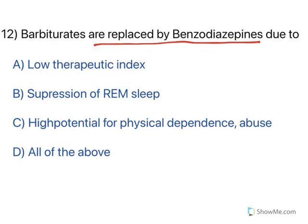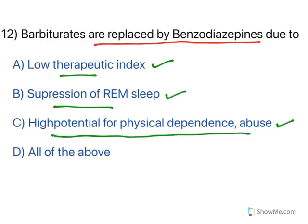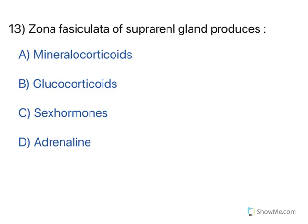Barbiturates are replaced by benzodiazepines because barbiturates have a low therapeutic index, they suppress REM sleep, and they have high potential for physical dependence and abuse. All of the above are correct. Because of these reasons, benzodiazepines are now used instead of barbiturates.